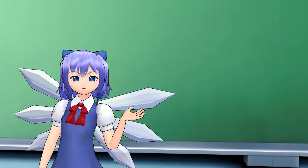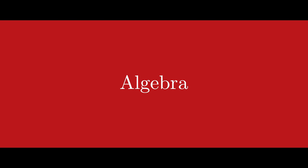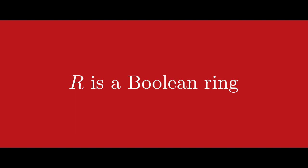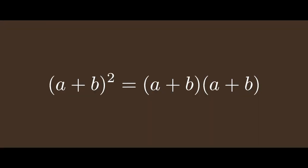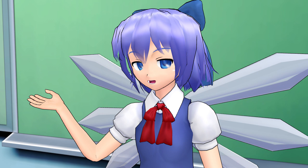Okay, take a and b in R. Then we're going to do some quick algebra. a plus b equals a plus b squared, because it's a boolean ring. And that equals a plus b times a plus b. If you distribute — because you can do that in all rings — you get a times a plus b, plus b times a plus b.